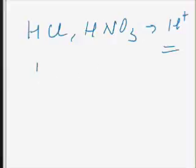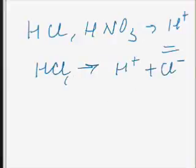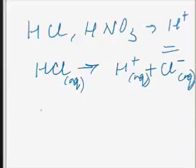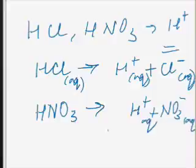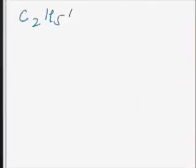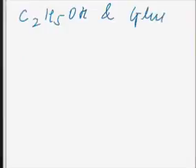HCl dissociates into H⁺ (aq) and Cl⁻ (aq). Similarly, HNO3 dissociates into H⁺ (aq) and NO3⁻ (aq). While alcohol, i.e. C2H5OH, and glucose are covalent compounds and they do not undergo dissociation in aqueous solution. This is evident from the fact that their aqueous solutions do not conduct electricity.